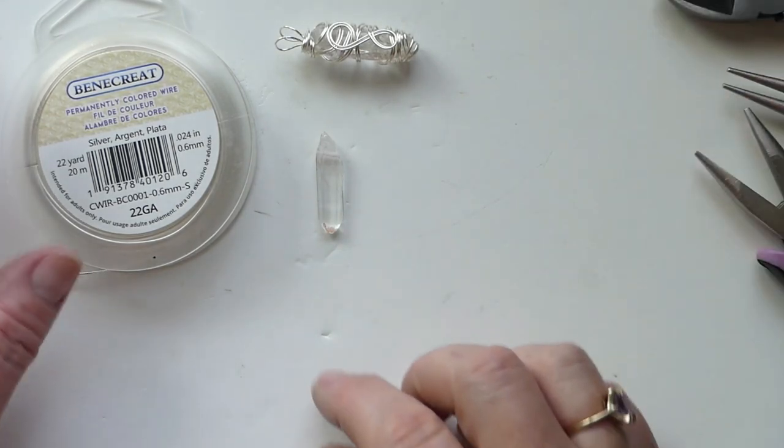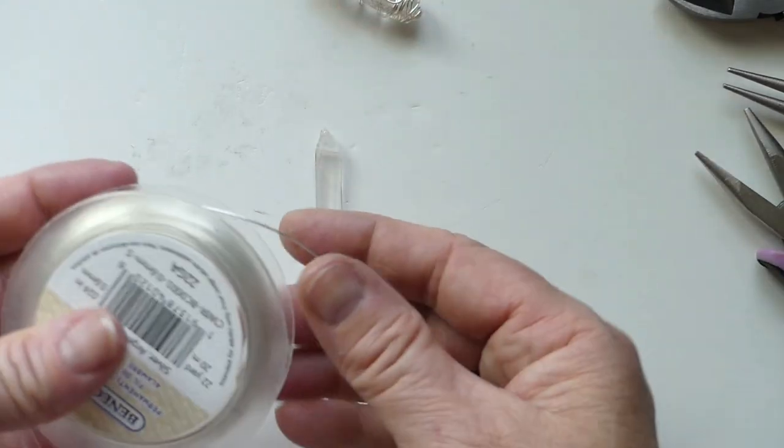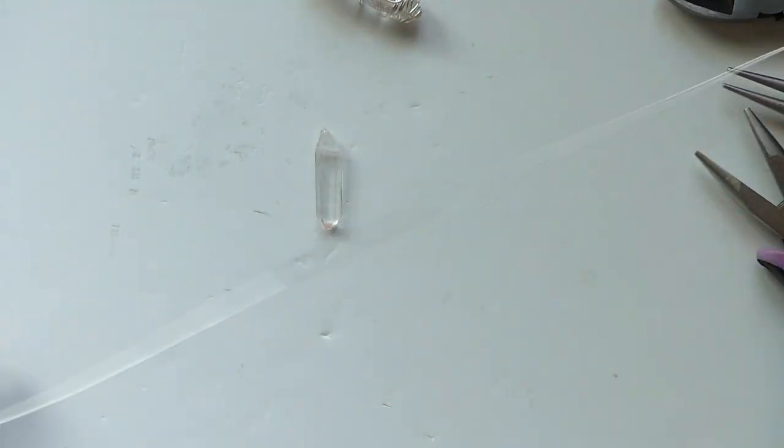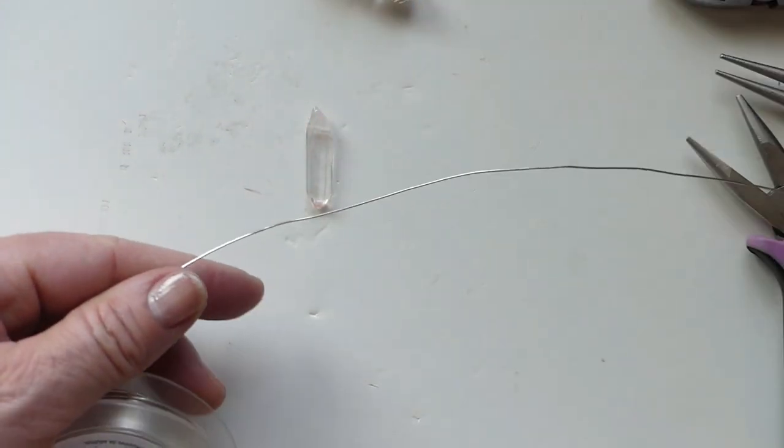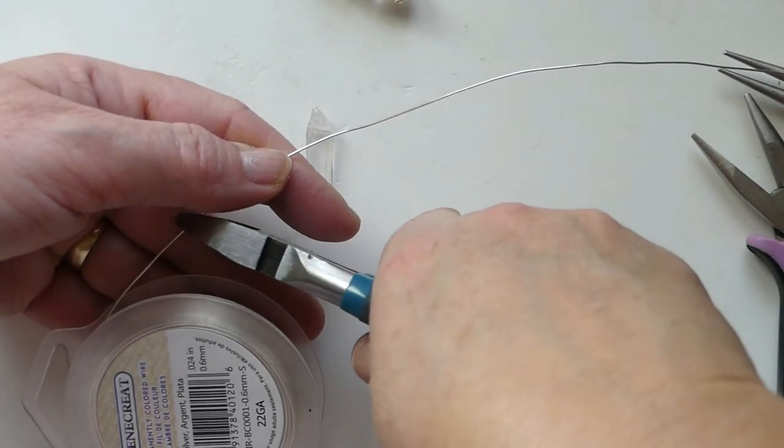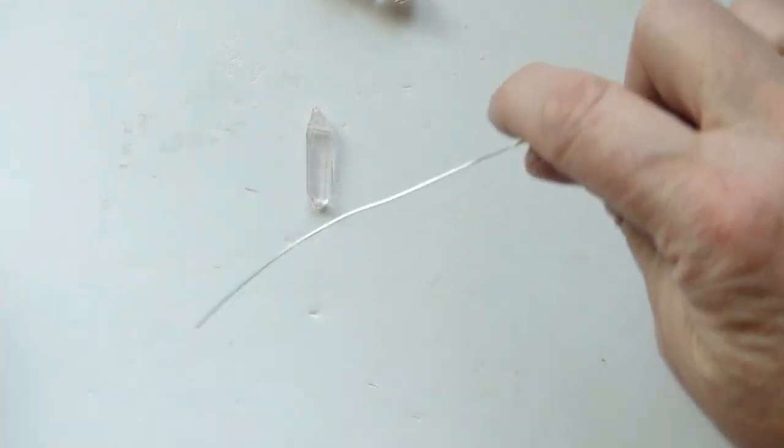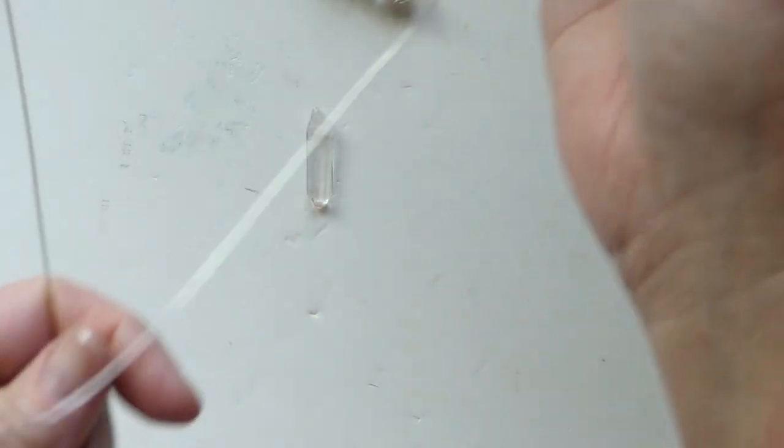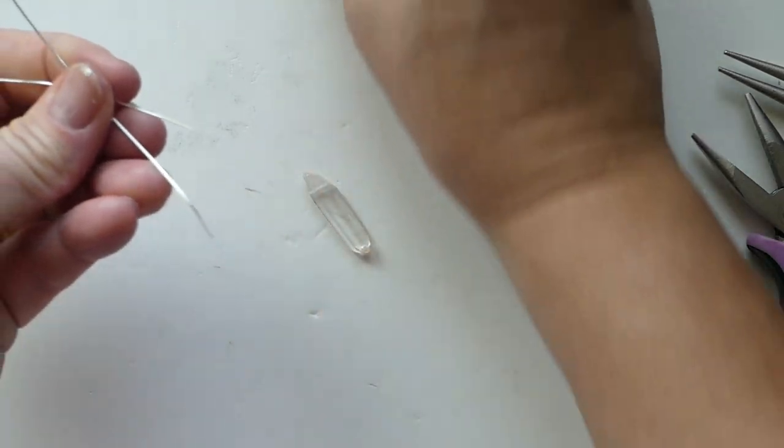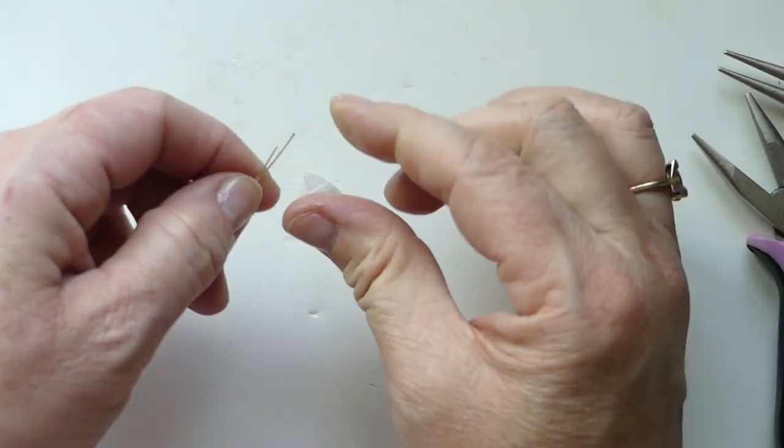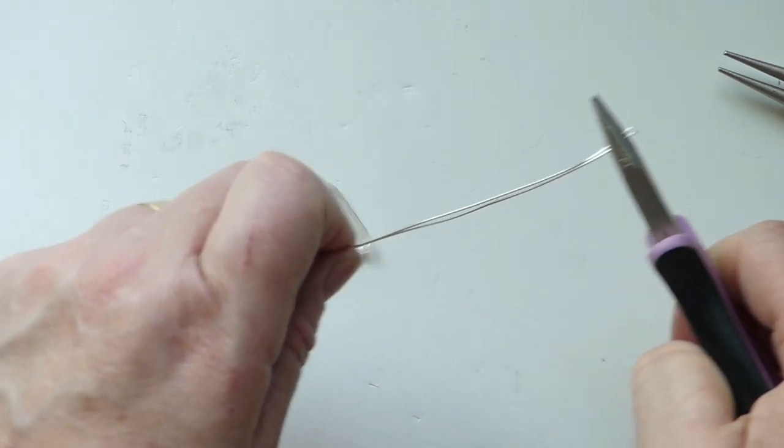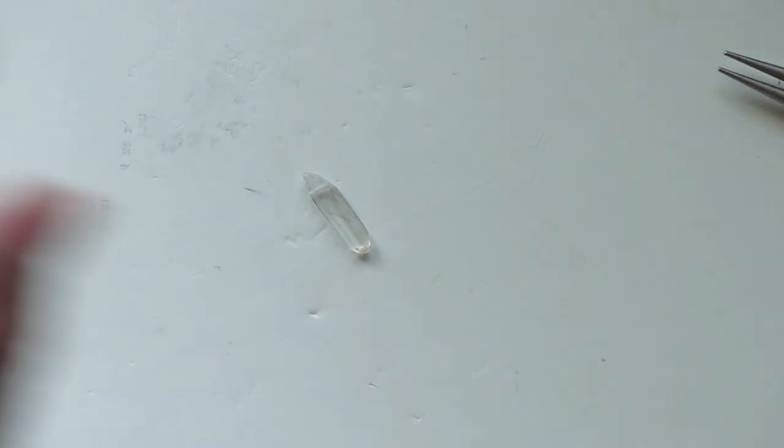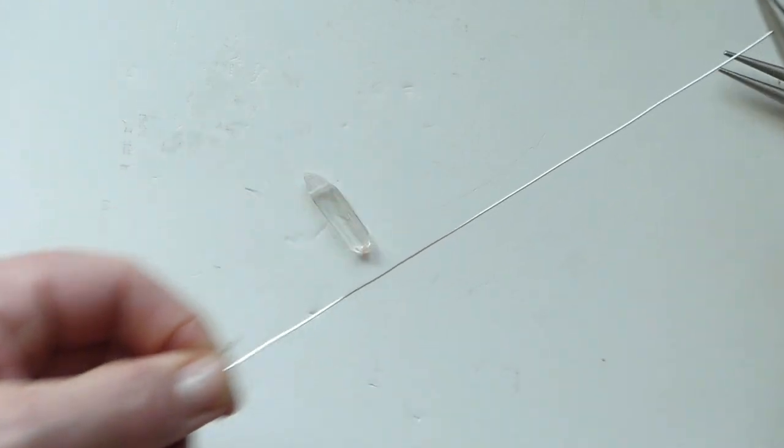So to start off, I'm going to take approximately an arm length of our silver wire. And then we're going to fold it in half. And it can be super slippery, so I just give it a pull. I hold it on to the end.